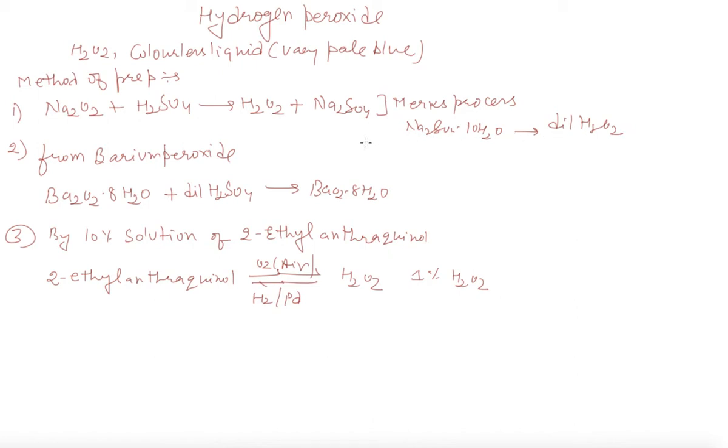Second method is from barium peroxide. In this case, the paste of hydrated barium peroxide is prepared in ice cold 20% sulfuric acid.